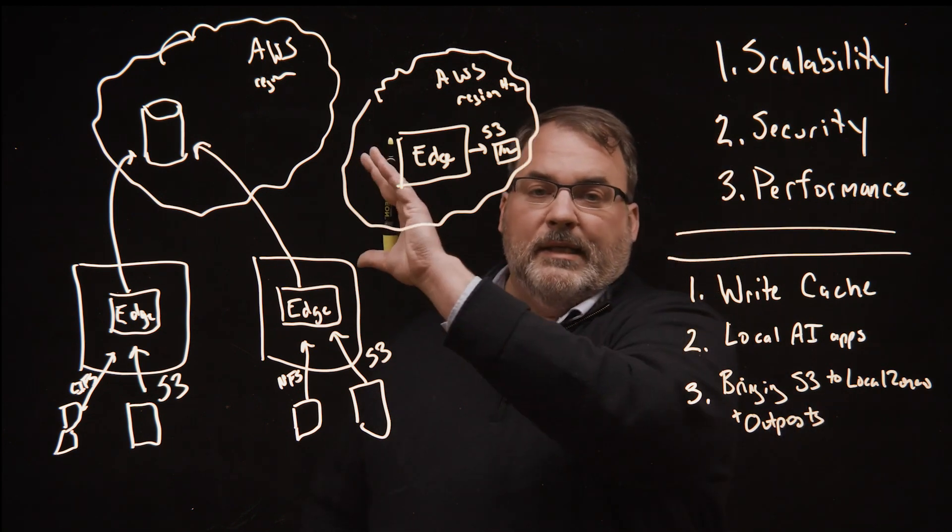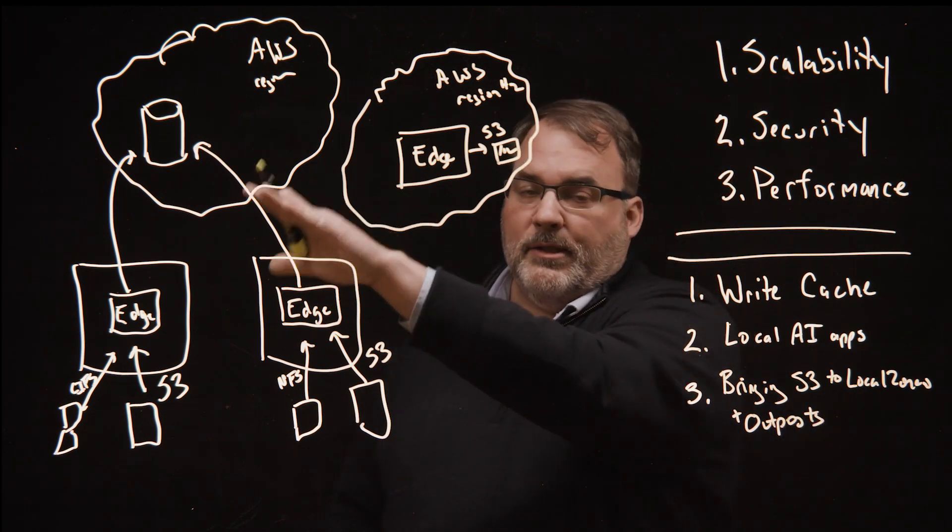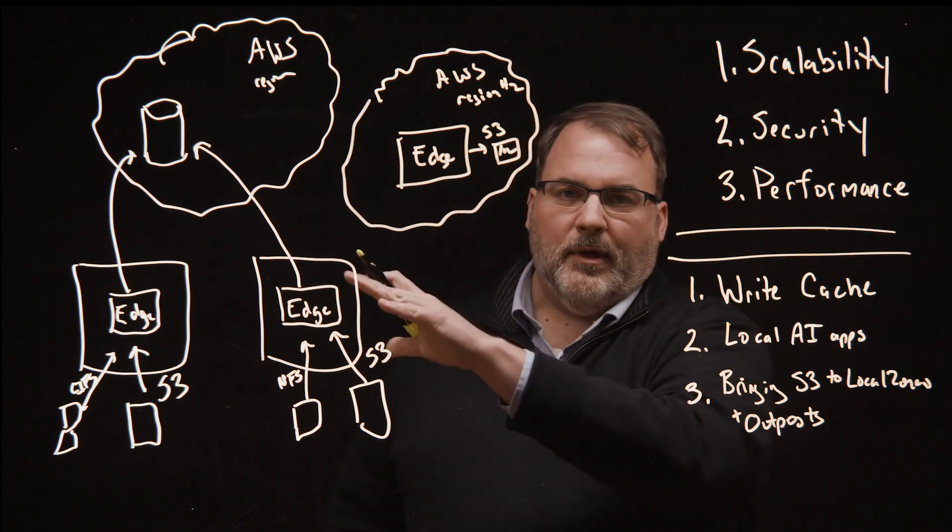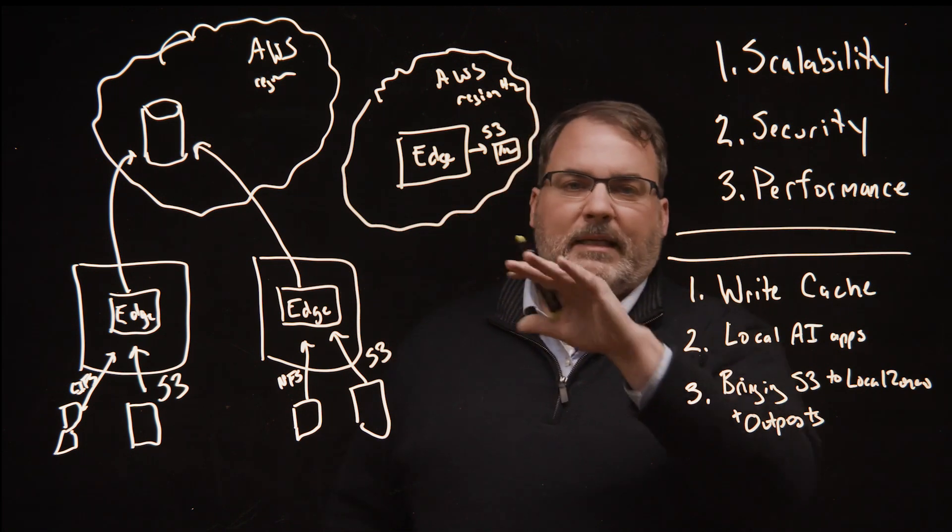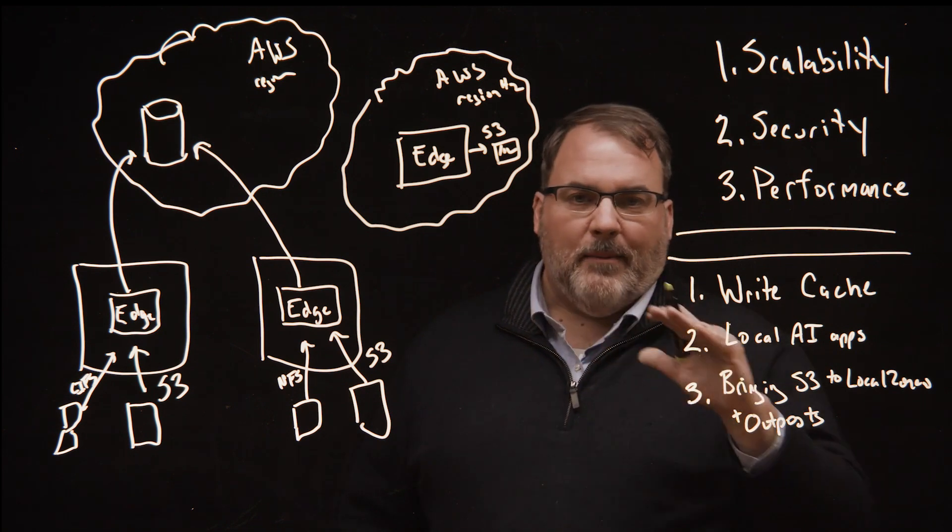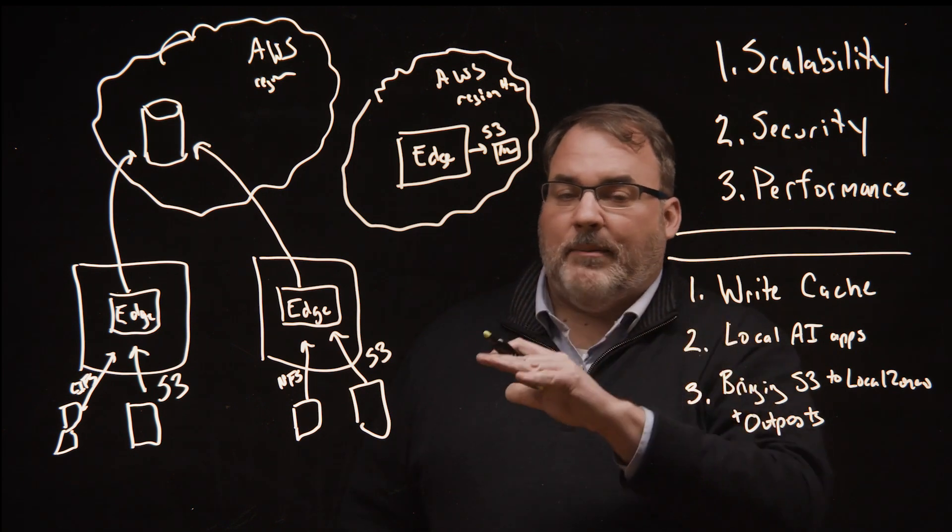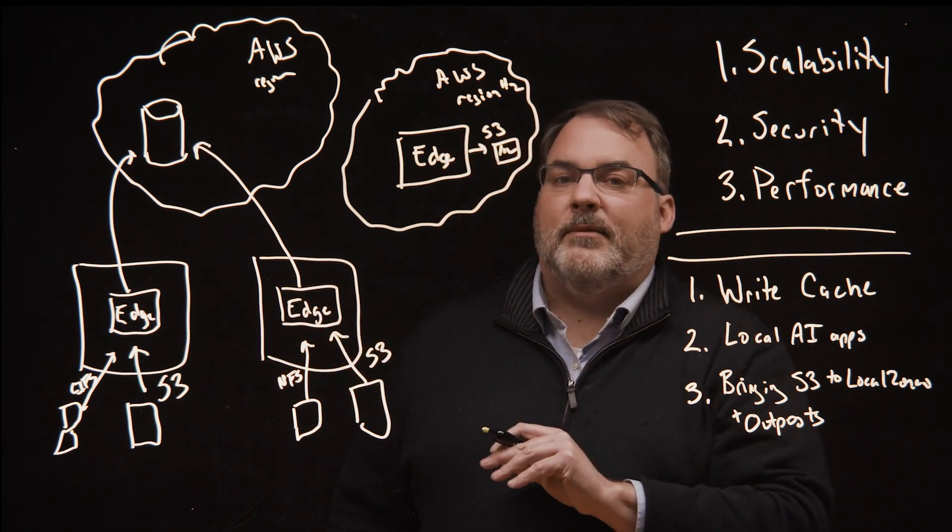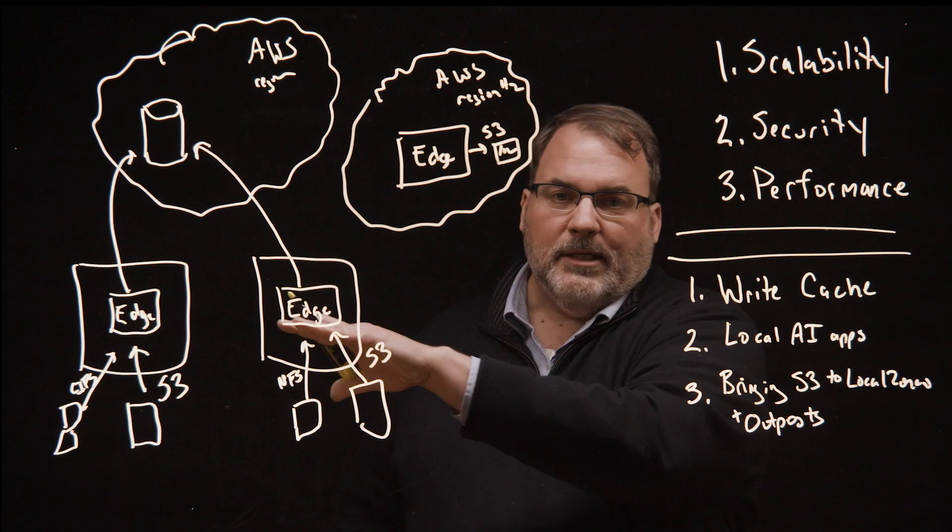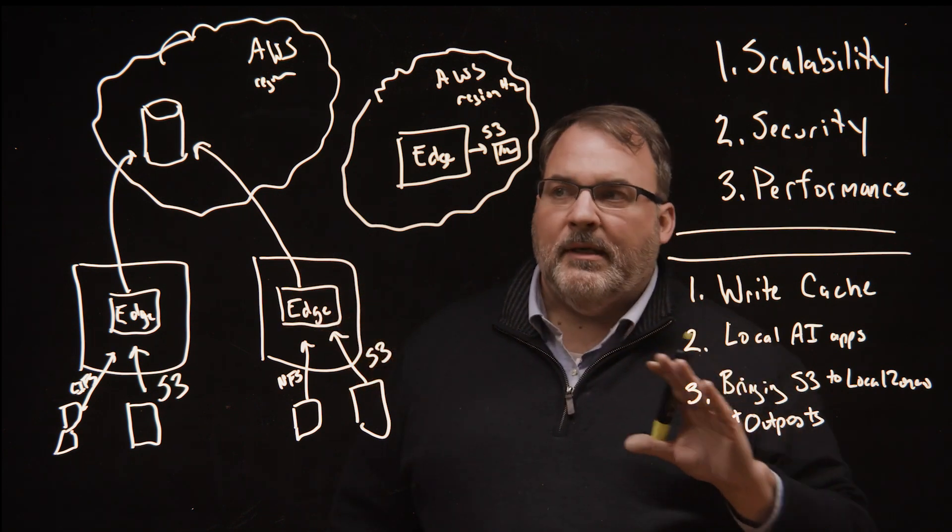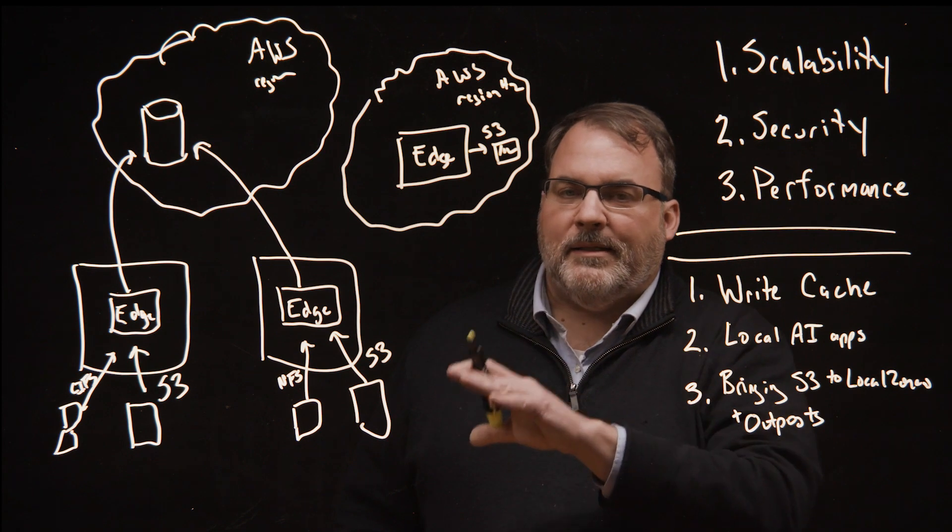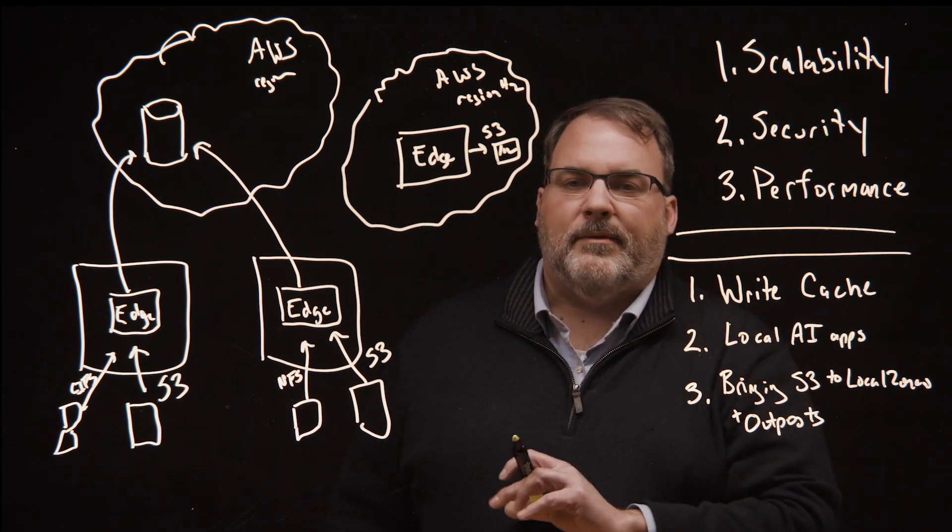Remember, I want the scalability of S3, I want to put as much data as I want, I want large folder structures. But I want to make that data available wherever my application lives. Today, those applications can be in your data center, in a remote office, in a second region within Amazon, or on Amazon infrastructure like Outpost. Any place you can spin up a virtual machine, you now have access to a high performance, low latency S3 cache.